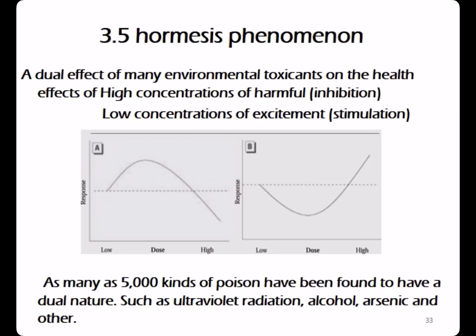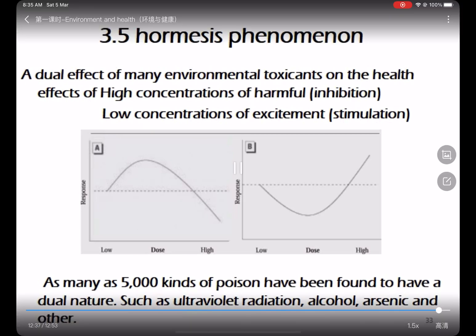Finally, we are going to talk about the hormesis effect. Hormesis describes the dual effects of many environmental toxicants on health — when you have a little of something, it is good for you, but when you have too much, it is bad for you. As many as 5,000 kinds of substances have been found to have this dual nature, such as UV light, alcohol, and arsenic. For example, a little sun exposure is good for your bones and health, but too much can cause skin cancer.